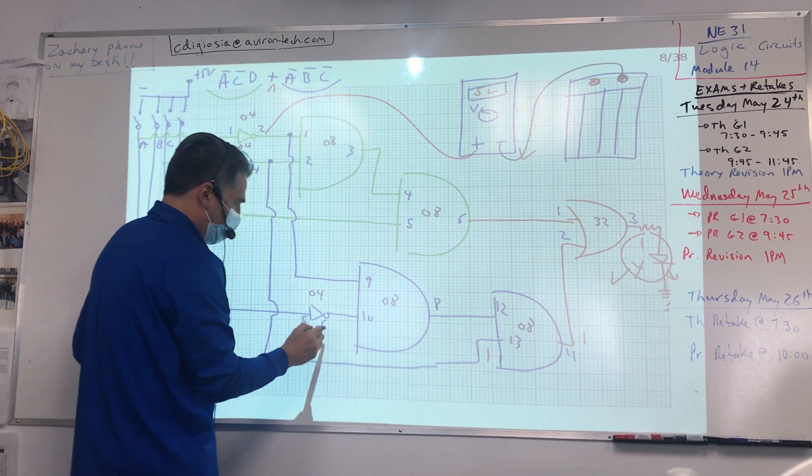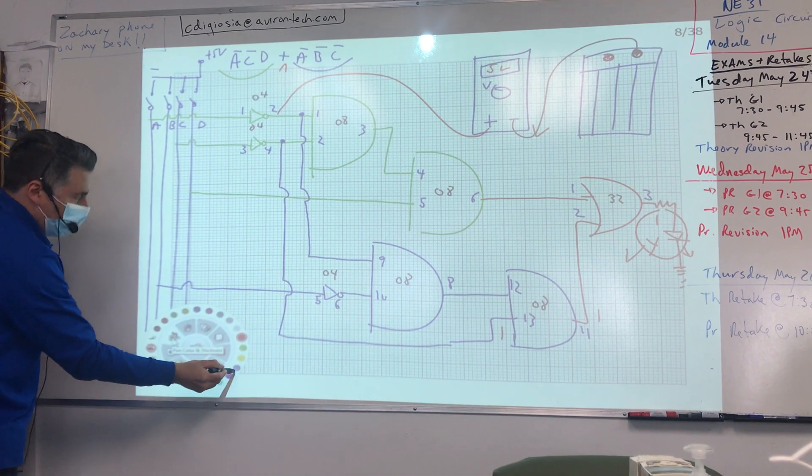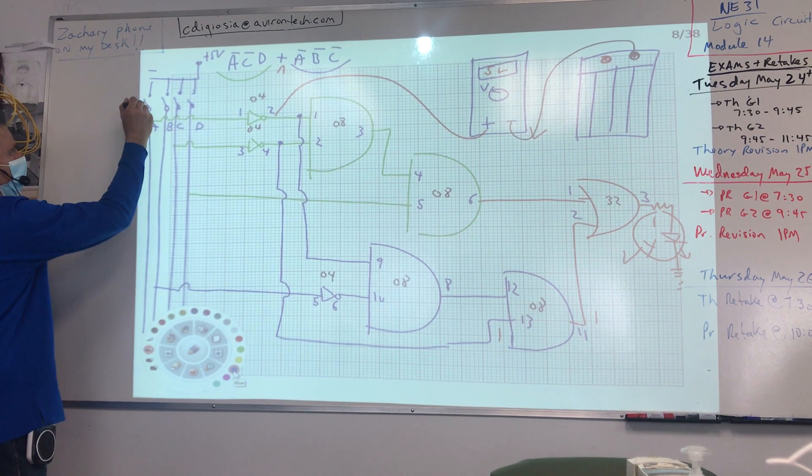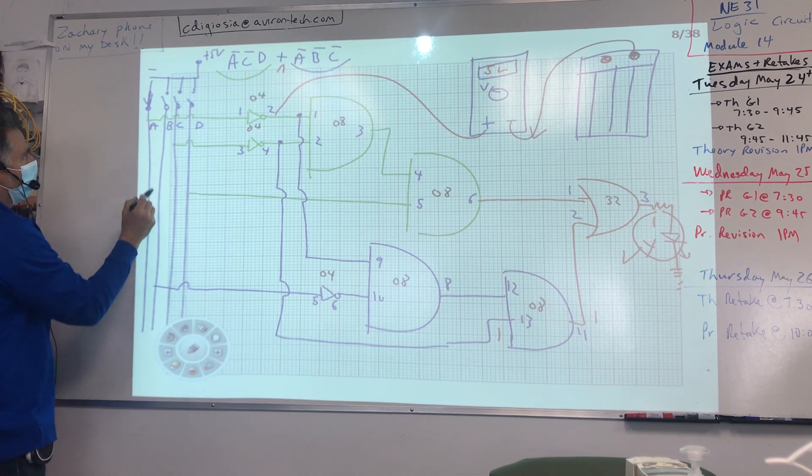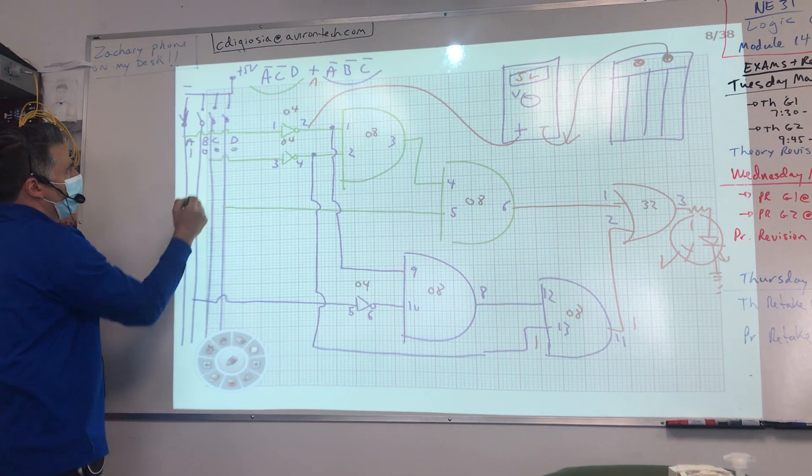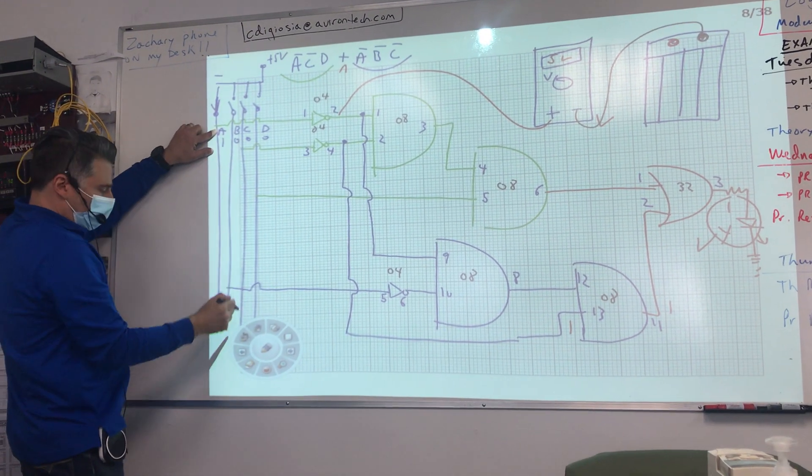So draw nice and big, get an eraser. We said that everything worked until we closed this switch here, so we had one zero zero zero, so that's what you're going to plot. This is A, I'm just going to use a red here.